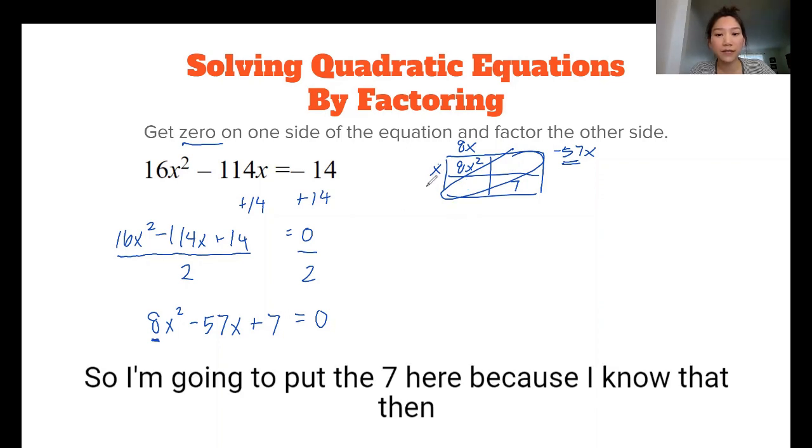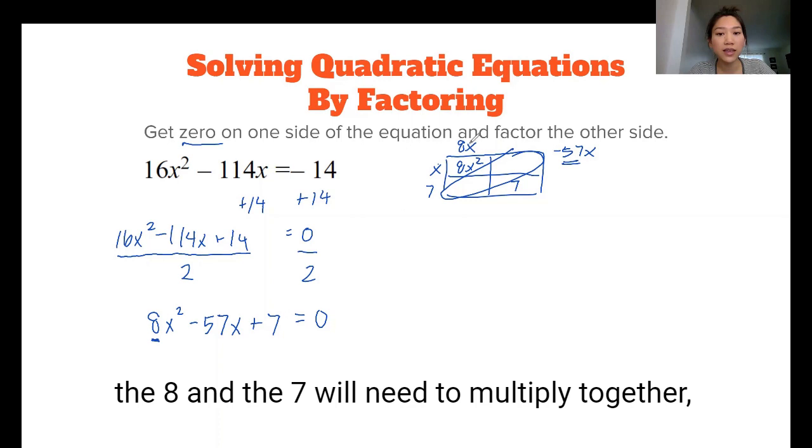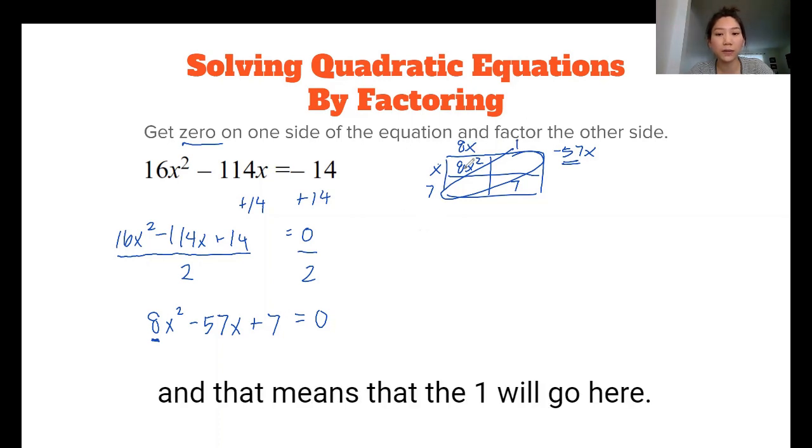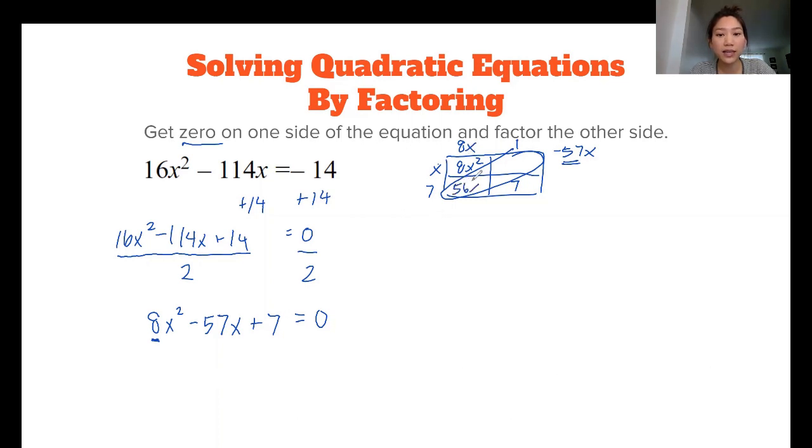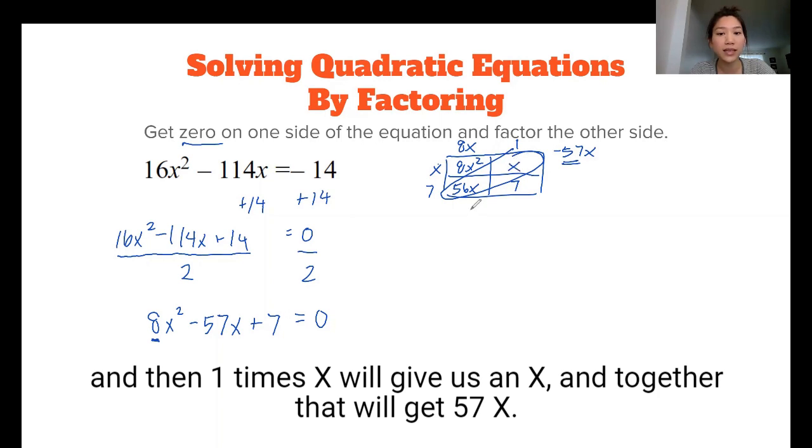So I'm going to put the 7 here because I know that then the 8 and the 7 will need to multiply together. And that means that the 1 will go here. And the reason I want that is because 8x times 7 gives us a 56x. And then 1 times x will give us an x. And together, that'll get us 57x.